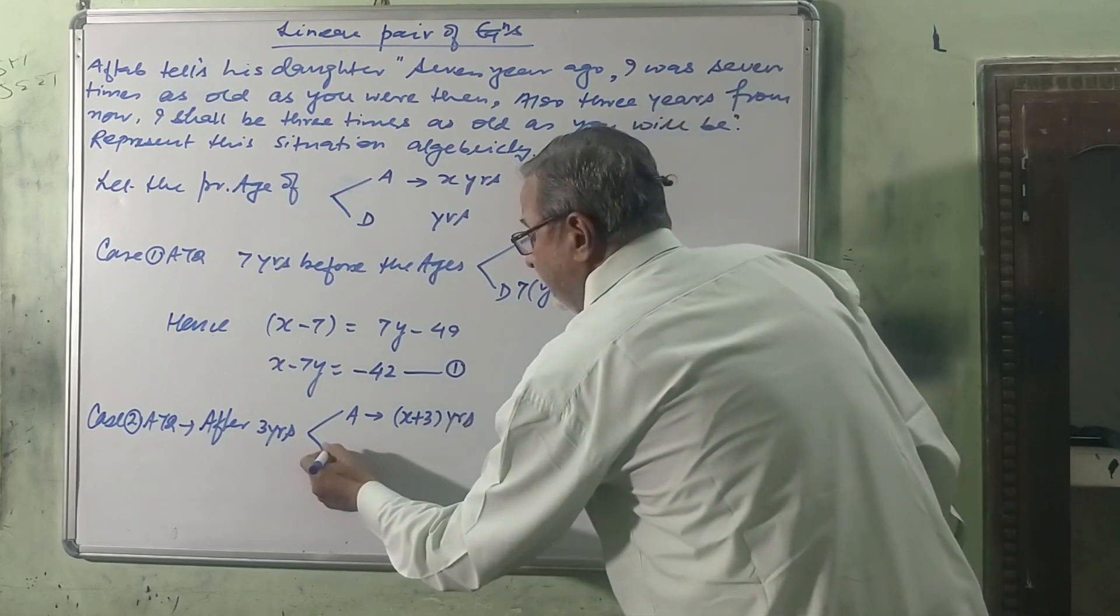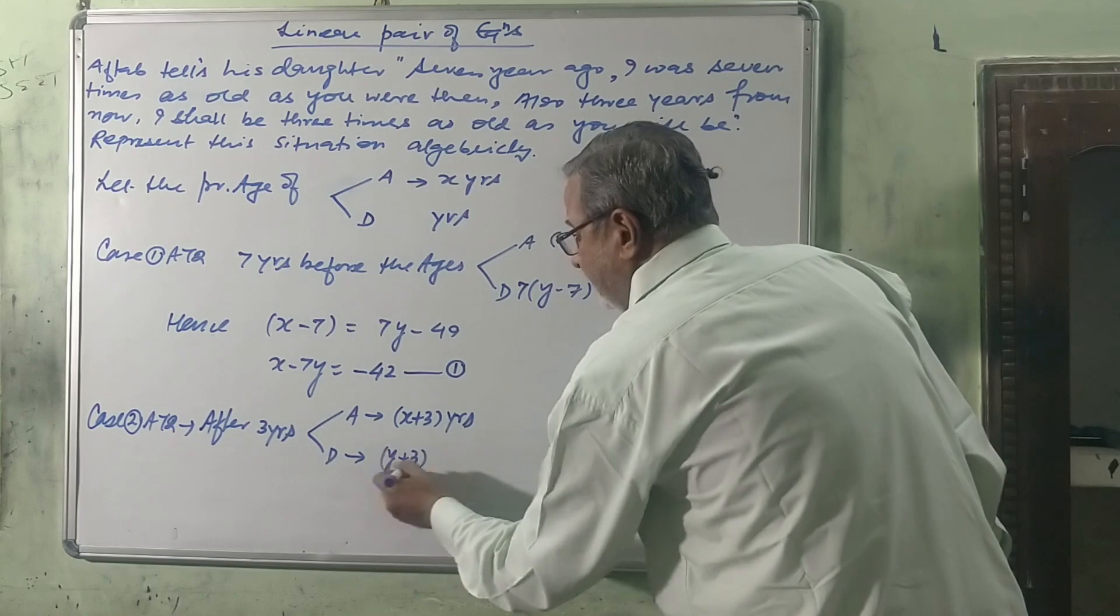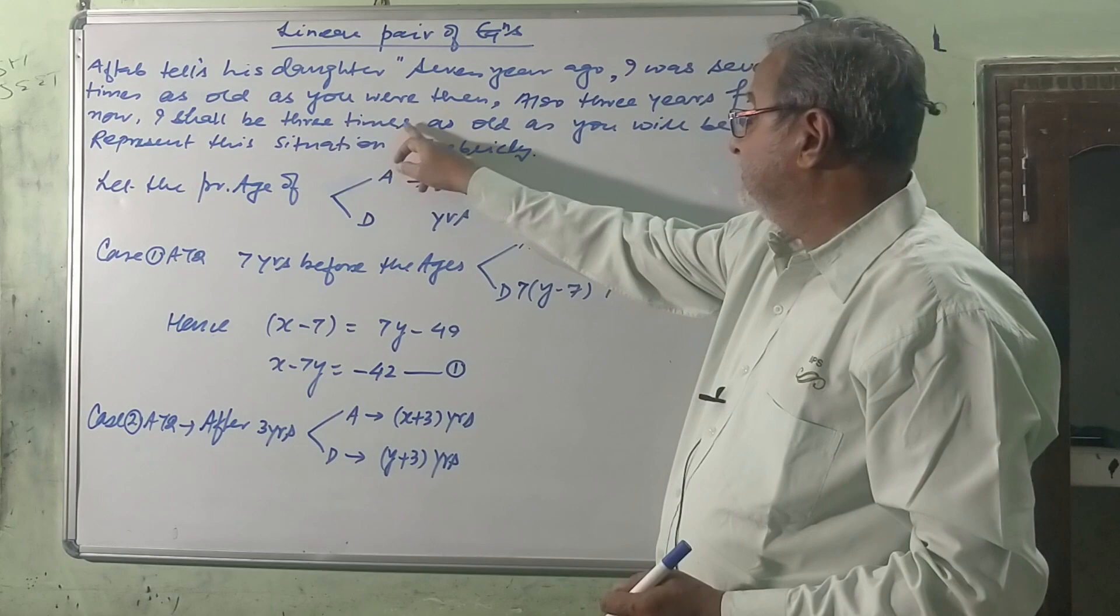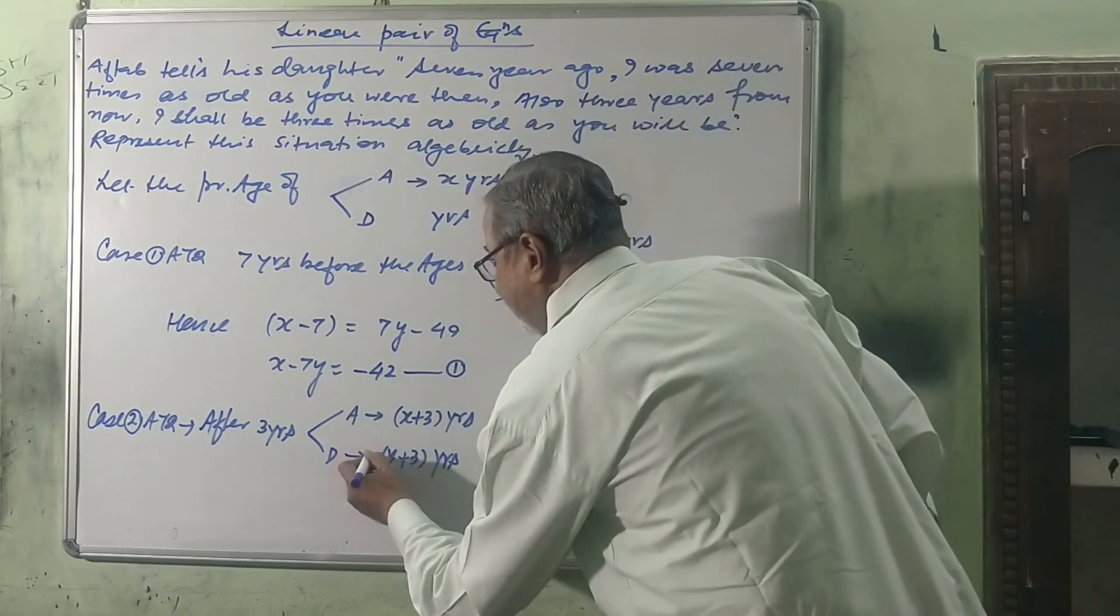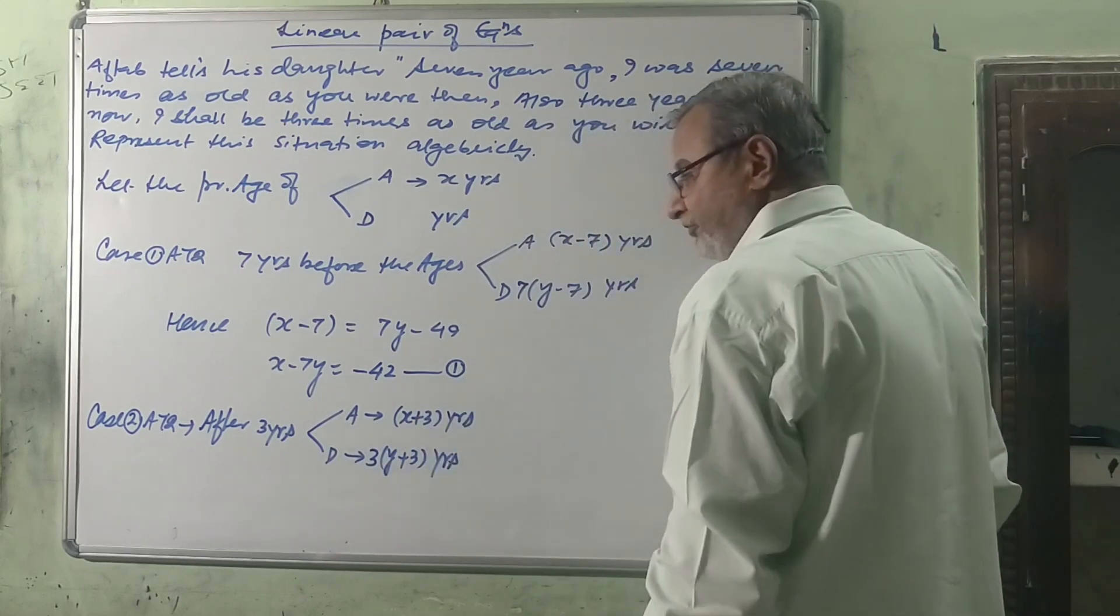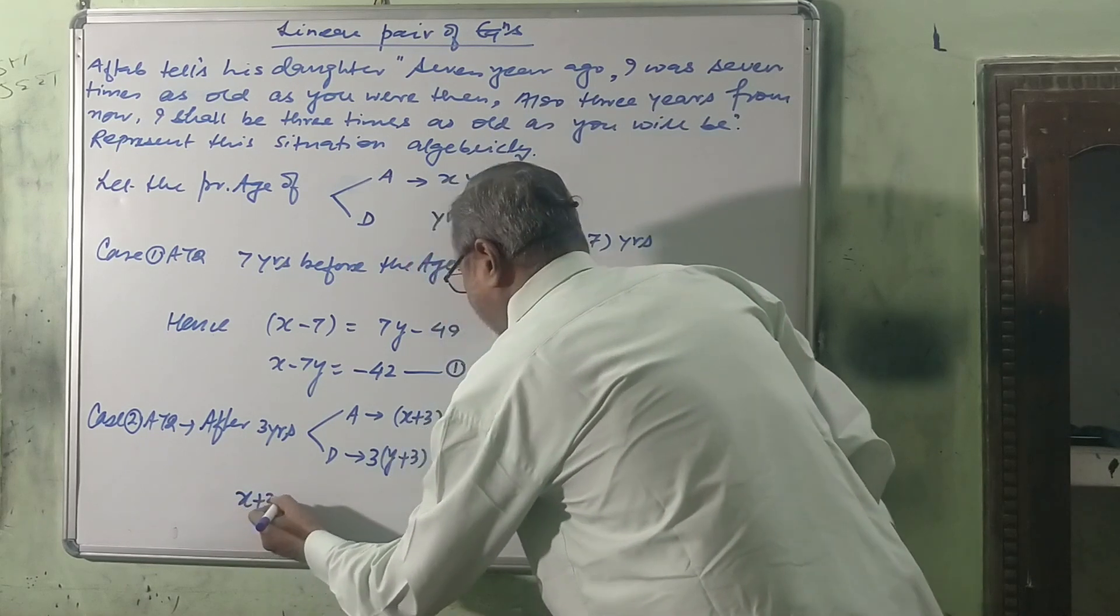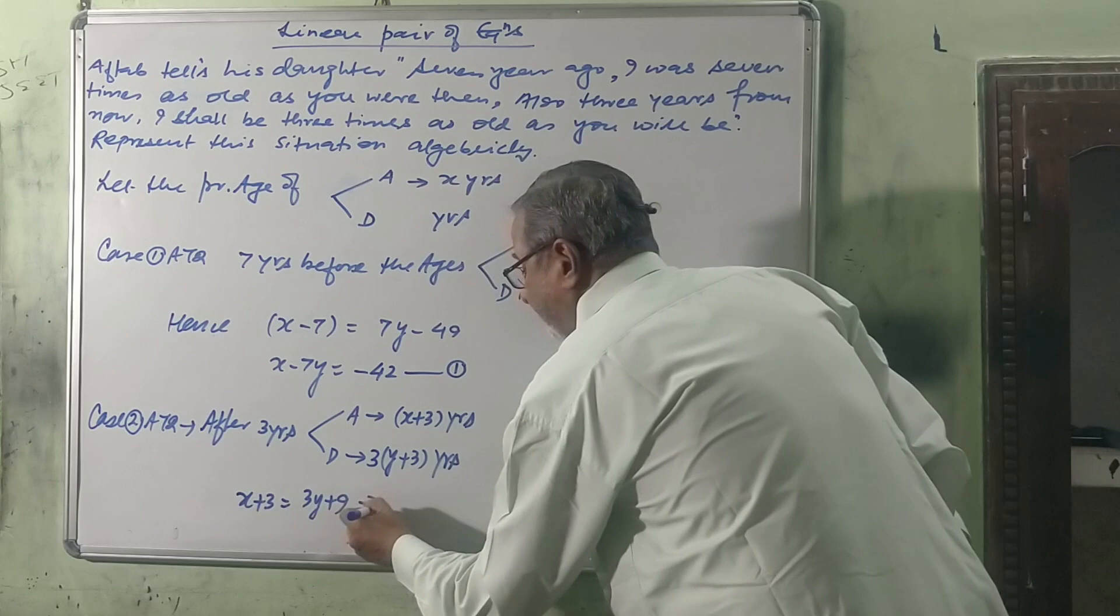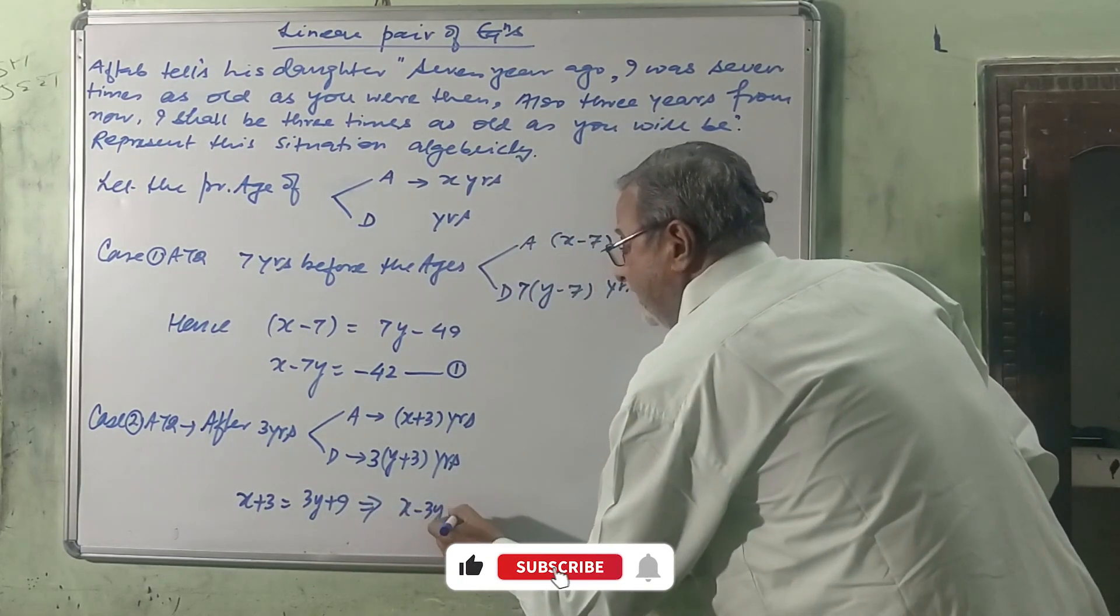And his daughter will be y plus 3 years. What condition says? I shall be 3 times as old as you will be. So I will place 3 multiplied by y plus 3. Hence x plus 3 equals 3y plus 9, and that implies x minus 3y equals 6.